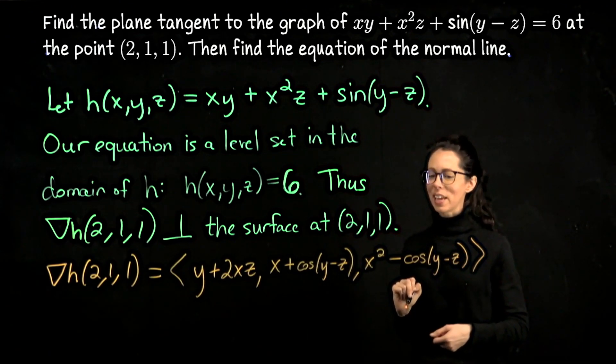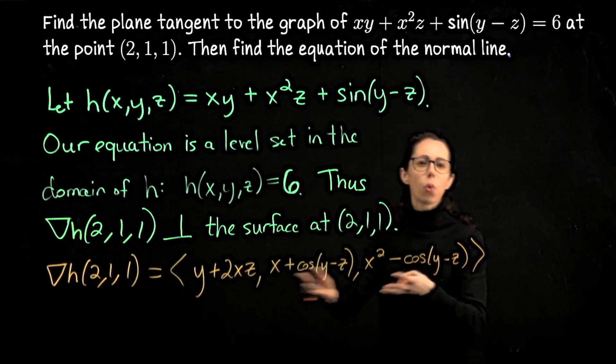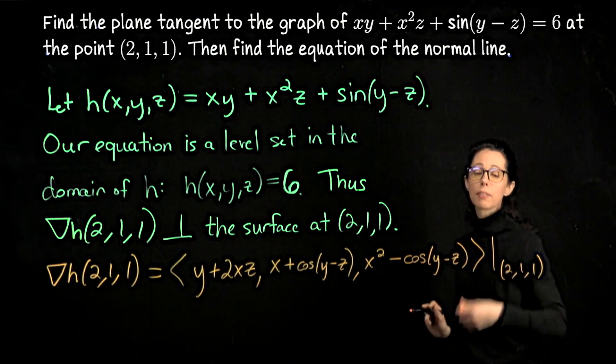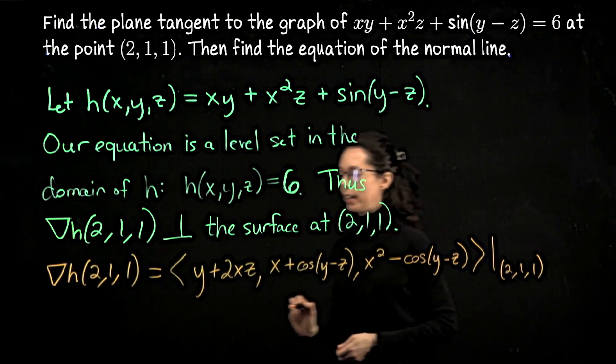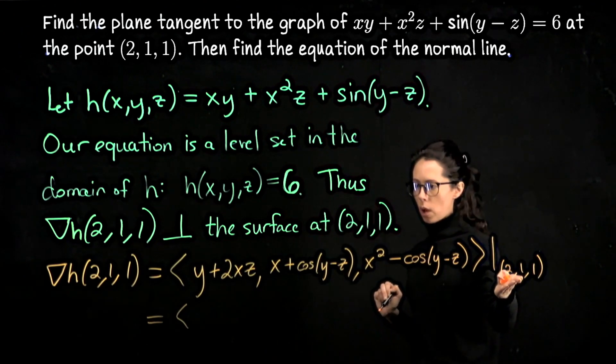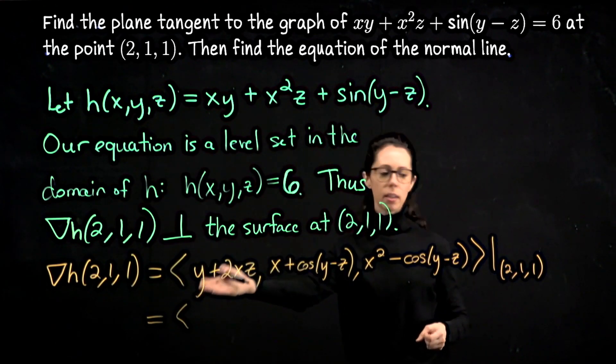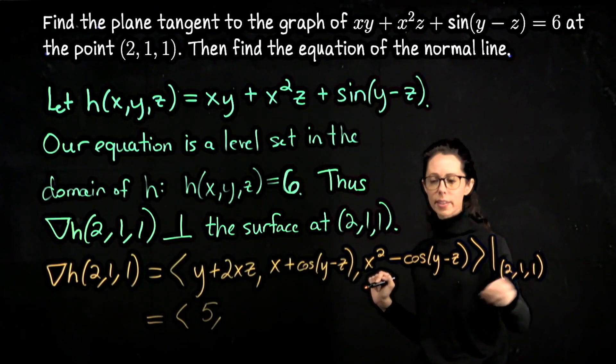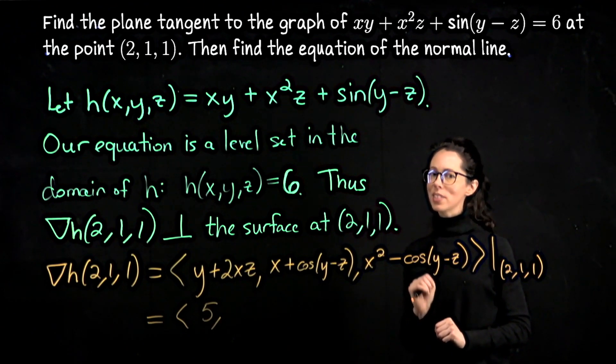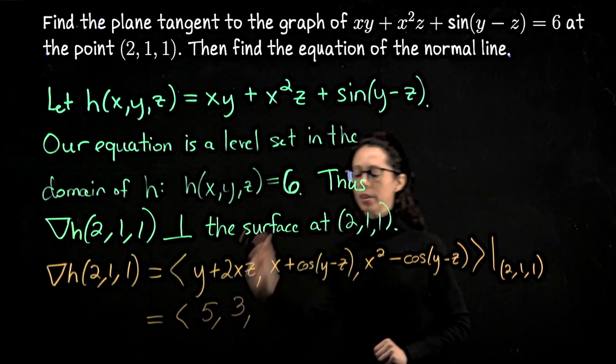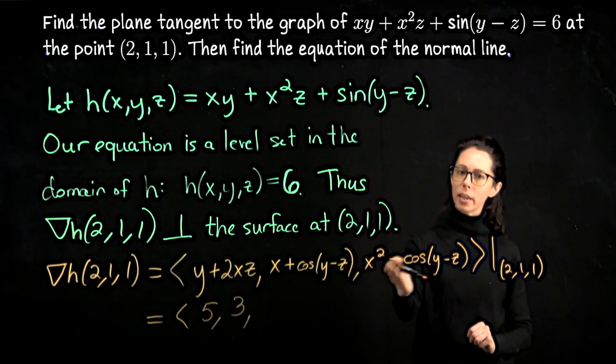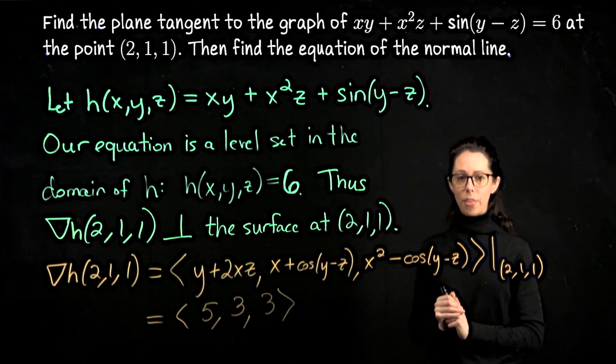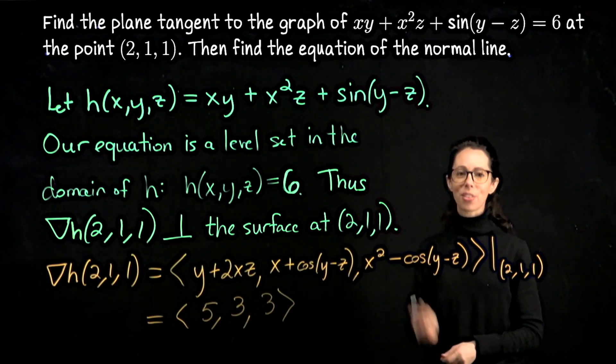The comment I made a second ago was saying that you shouldn't say this one specific vector is equal to this formula in terms of general x, y, and z. So I'm going to put an evaluation bar here to indicate that I intend for this vector to be evaluated at the point (2,1,1). Let's do that. When y is 1, x is 2, and z is 1, we get 1 + 4 is 5, and then x is 2, y and z are both 1, so y - z is 0. 2 + cos(0) is 2 + 1—make sure you know that the cosine of 0 is 1. And then we have 2² - cos(0), so that's 4 - 1 is 3. So the vector orthogonal to our tangent plane at the point (2,1,1) is the vector <5, 3, 3>.